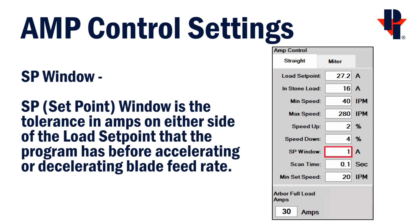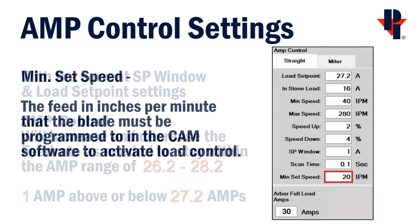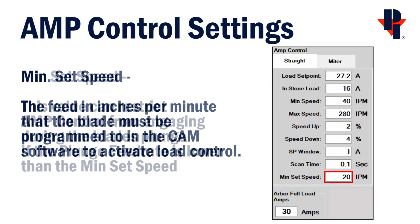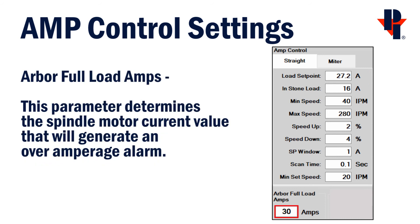The value of the setpoint window is the range to either side of the load setpoint. When the arbor motor draws more than 1 Amp of the load setpoint, it will decrease the feed rate. And when it draws 1 Amp less, it will increase the feed rate. The minimum set speed reads the feed rate from the program. When the feed rate is greater than the minimum set speed, it will engage the Amp control. This can be used to disable Amp control while the blade is plunging. The arbor full load amps are usually set to the specifications of the motor.